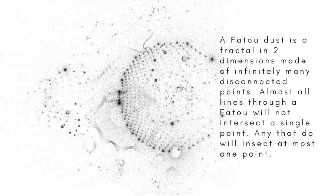If we consider the same with fractals of dimension less than 1, something else happens. These fractals all consist of a cloud of isolated points. An example is Fatou dust. The surprising result is that almost all lines that intersect Fatou dust do so at only one single point, for a fractal dimension of 0, while almost all lines in general, even if restricted to those passing through the Fatou dust, will never intersect it.